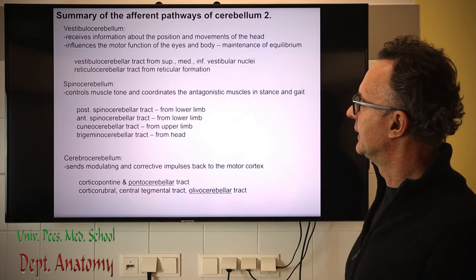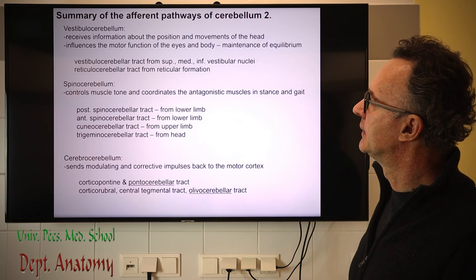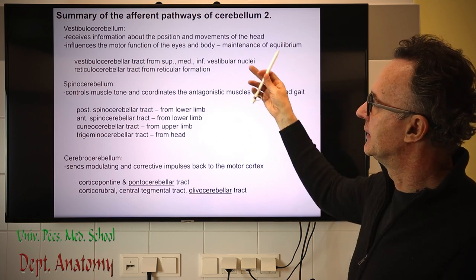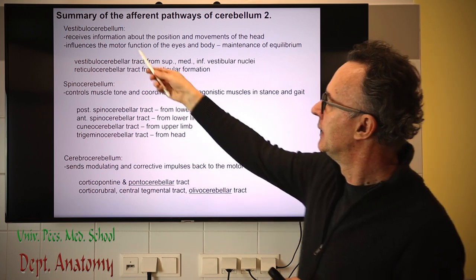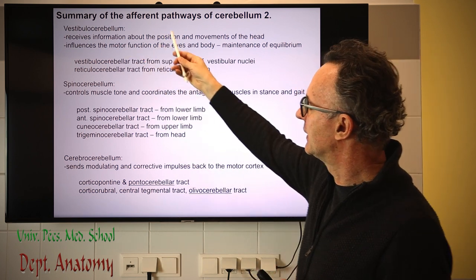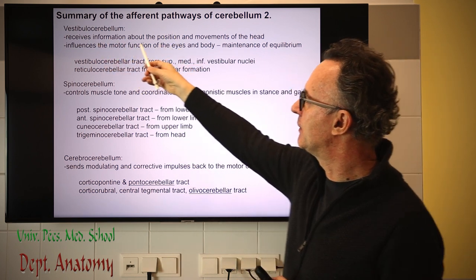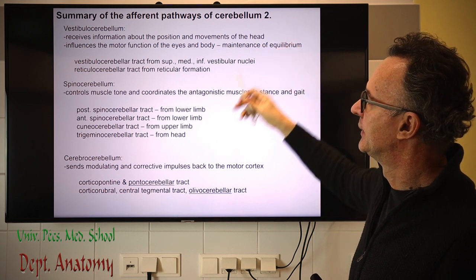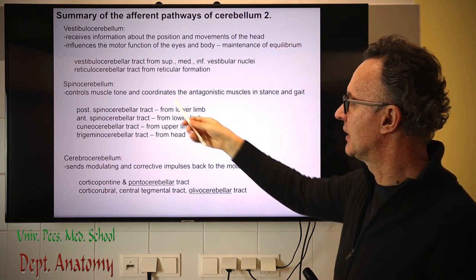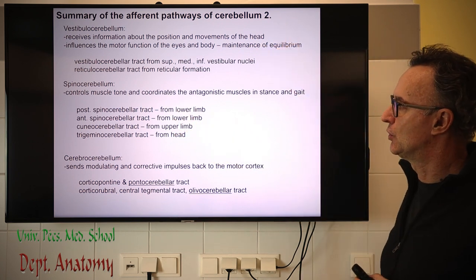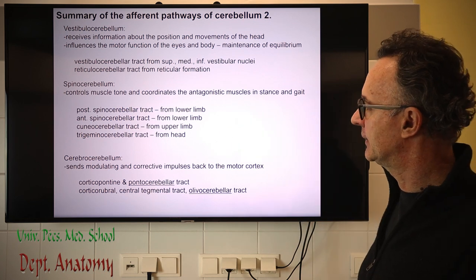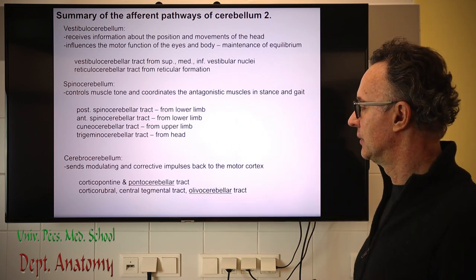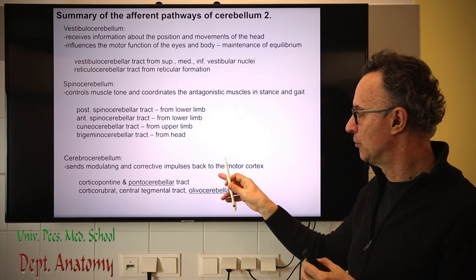To summarize the afferent pathway functions: the vestibulocerebellum is for eye movements and balance; the spinocerebellum controls muscle tone and coordinates antagonistic muscles in stance and gait; and the pontocerebellum is important for fine-tuned movements.